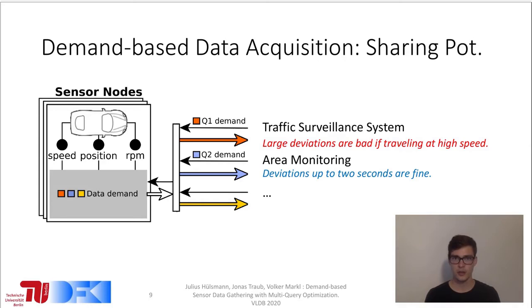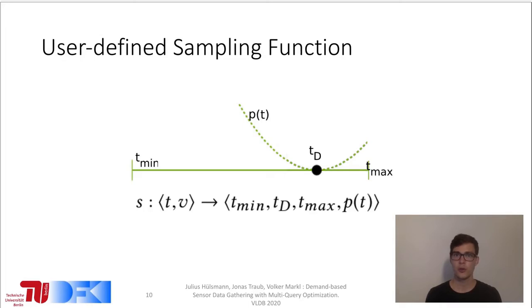Small deviations from the suggested read-time are useful to increase the potential for read-sharing among queries. Depending on the query, however, these deviations can have different side effects that need to be specified to enable read-fusion. We combine this two information in the so-called user-defined sampling function. A user-defined sampling function is a mapping from the last sensor read time and value to the next sensor read request. This request consists of three types of values.